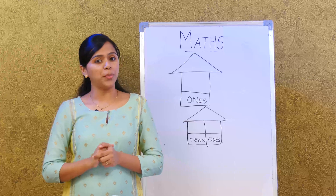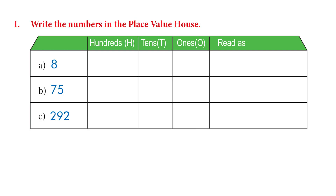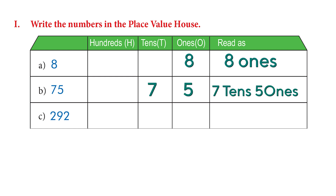I hope you all understood. Let's try an activity — turn to page 58. The activity says to write the numbers in the place value house. The first number is 8, which we read as eight ones. Next is 75 — seven tens, five ones. Then 292 — two hundreds, nine tens, and two ones.